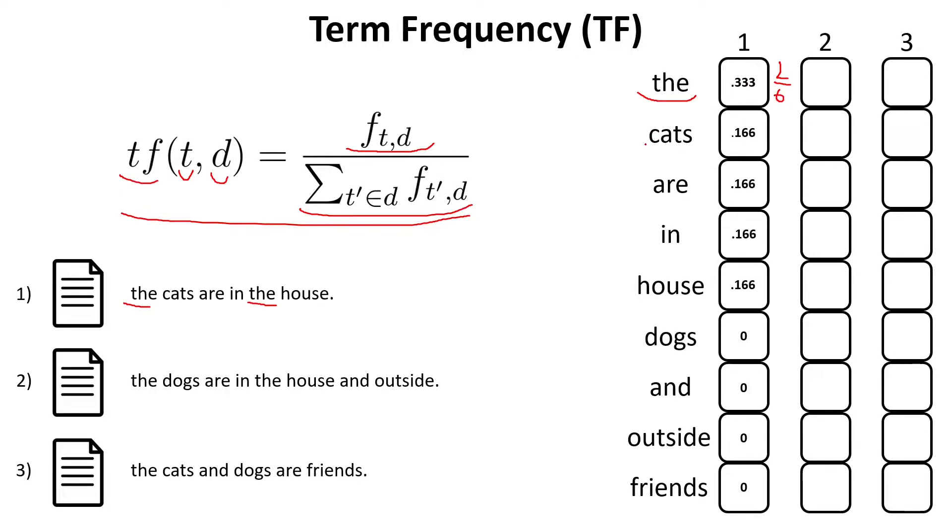And let's compute this value once more for instance for the word cats. Cats appears only once in our document. So, the value of the numerator is equal to 1. And again, the value of our denominator is equal to 6. And when we divide these two values, we obtain 0.66. And we do this algorithm for all the words in the document, like are, in, and house for the first document.